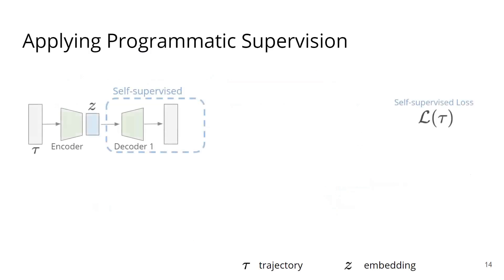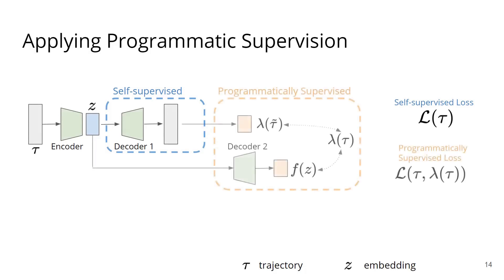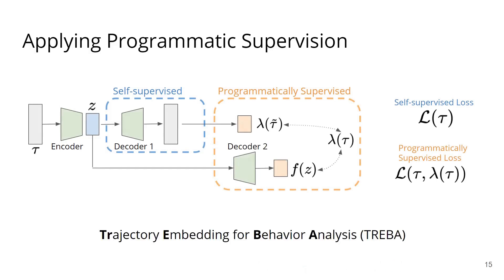Our framework is based on the encoder-decoder setup, where we start from a self-supervised loss based on self-decoding. The other part of our framework is supervised using the expert-designed programs. We study a few ways to use these programs, including programmatically supervised contrastive loss. We call our framework trajectory embedding for behavior analysis, or TREVA.